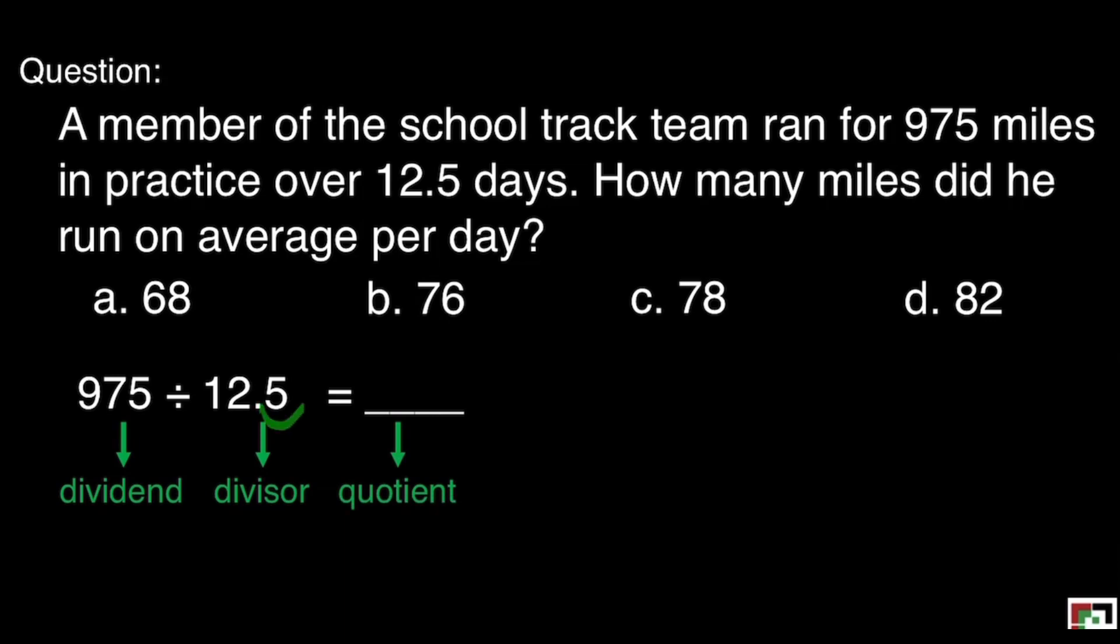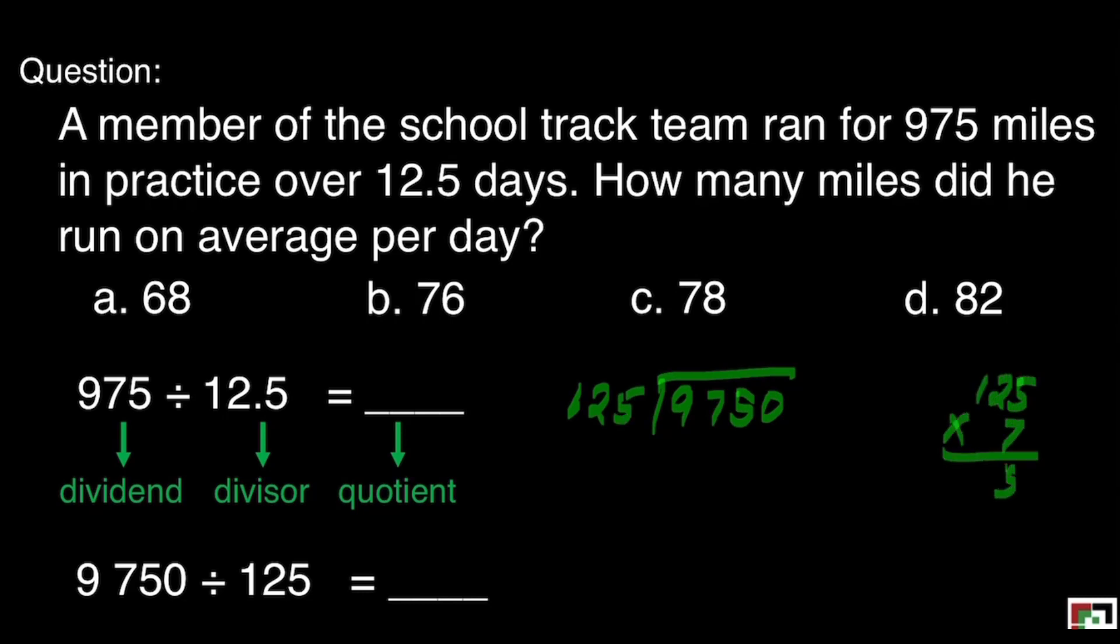We have to move one place to make our divisor a whole number. We will also move one place to our dividend. Our new equation is 9,750 divided by 125. We are ready to divide. How many 125's are there in 975? I think it's 7. That is 875. 7 times 125 is 875. Then subtract. We get 1,000.